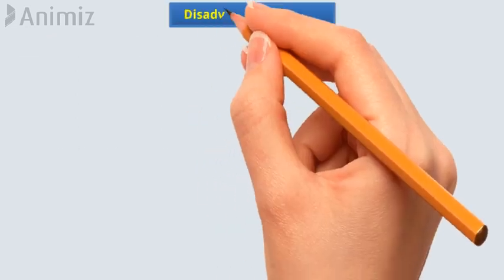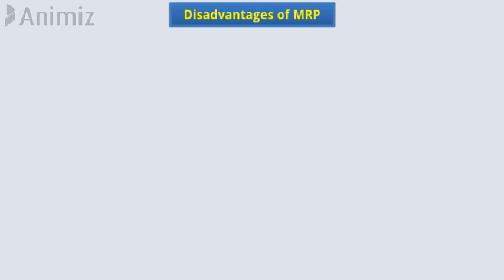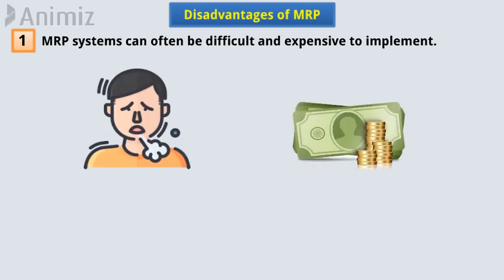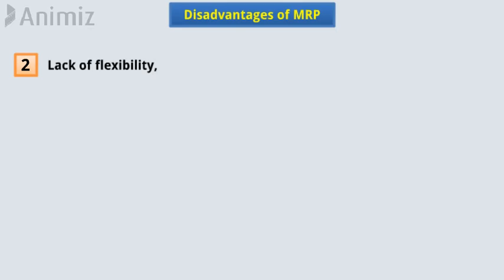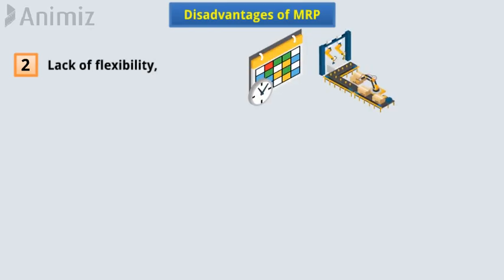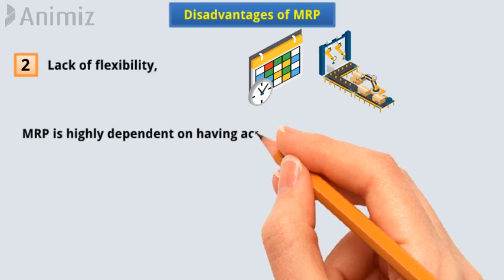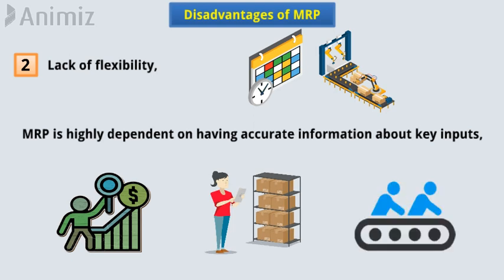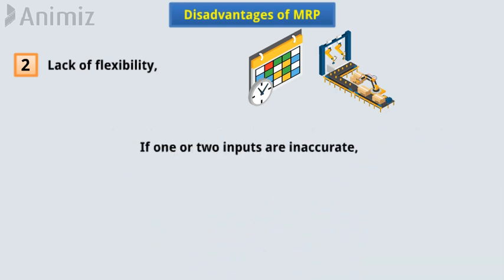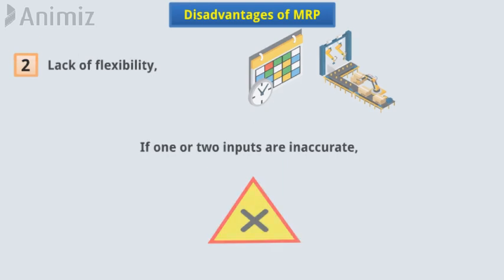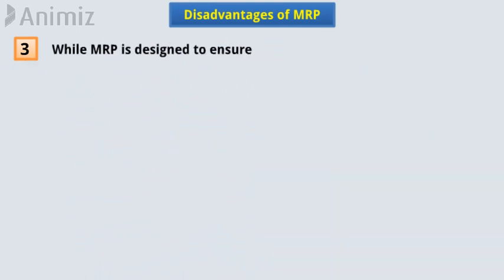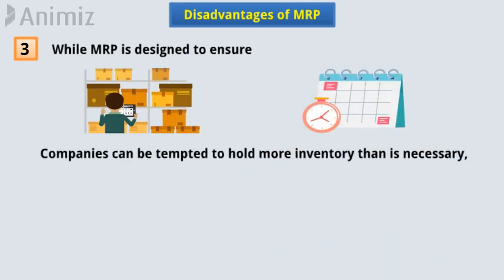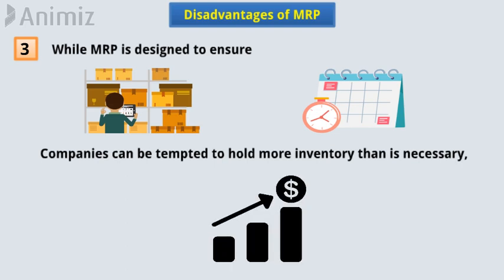Disadvantages of the MRP process: 1. MRP systems can often be difficult and expensive to implement. 2. Lack of flexibility when it comes to the production schedule. As MRP highly depends on having accurate information about key inputs — especially demand, inventory, and production — if one or two inputs are inaccurate, it can magnify errors at later stages. 3. While MRP is designed to ensure adequate inventory levels at the required times, companies can be tempted to hold more inventory than is necessary, thereby increasing inventory costs.